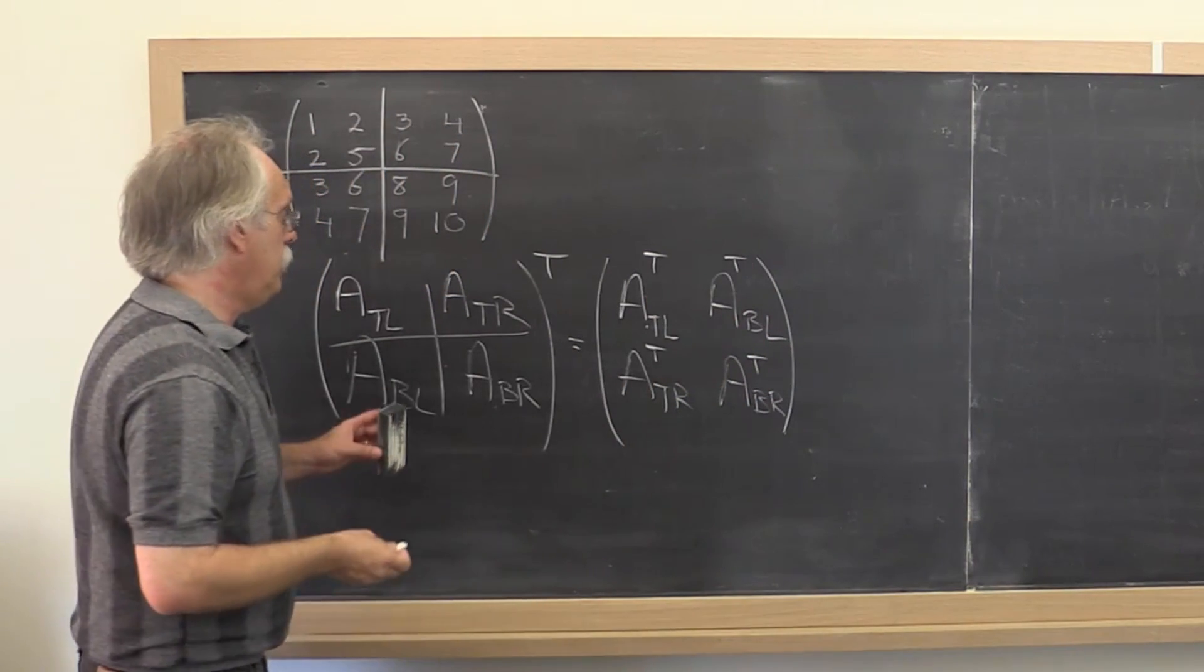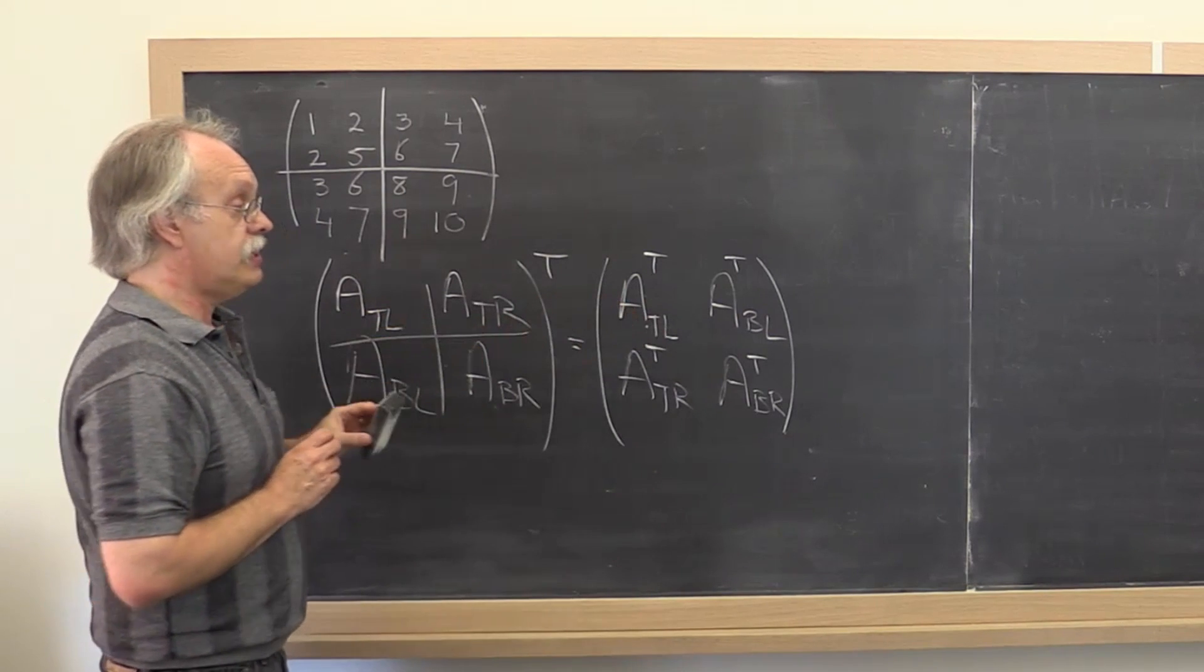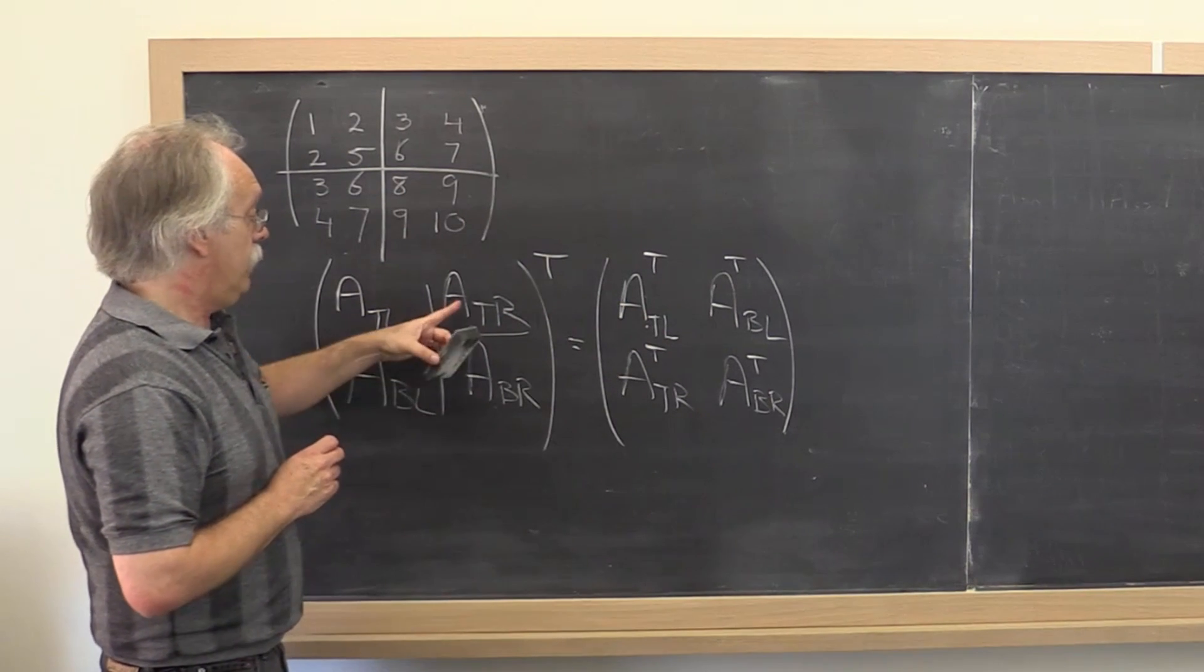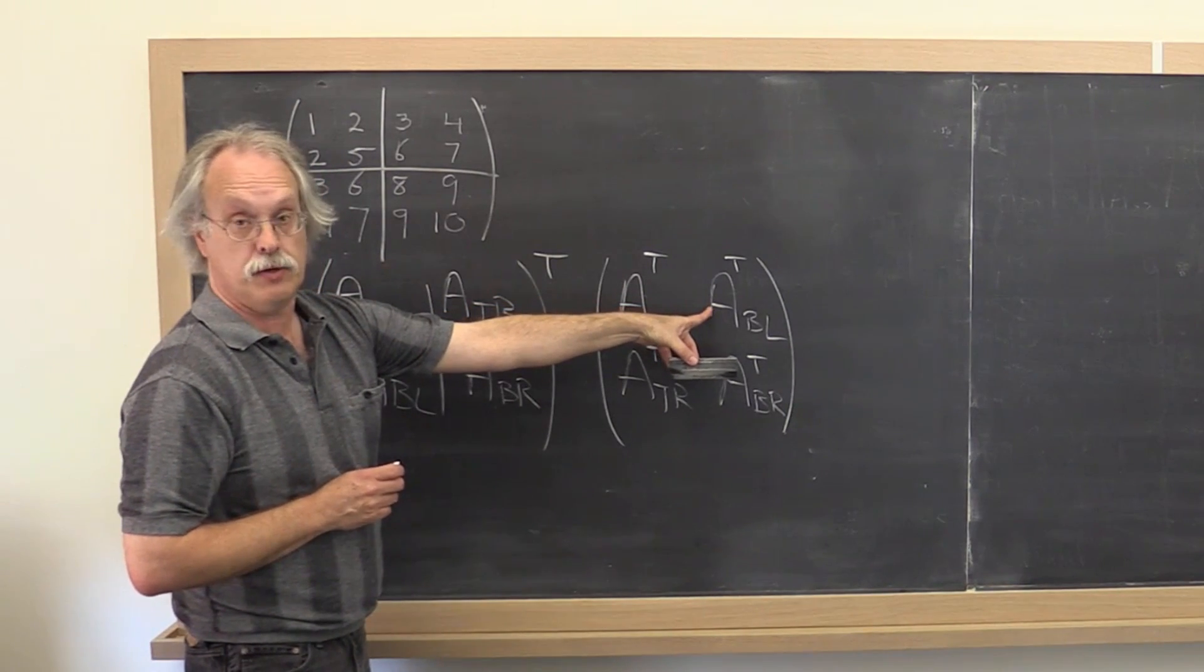And what does that mean? If the matrix is symmetric, then it is its own transpose. And what does that mean? Then A top right is actually the same as A bottom left transpose.